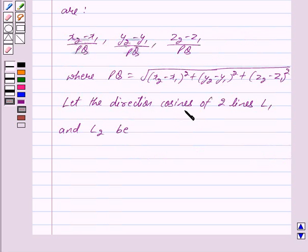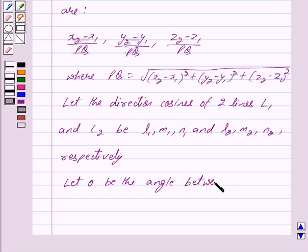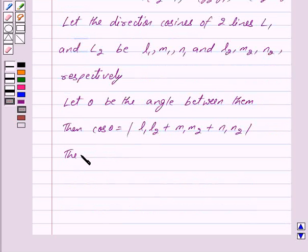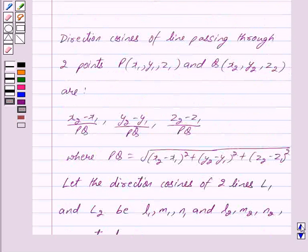Let the direction cosines of two lines L1 and L2 be (L1, M1, N1) and (L2, M2, N2) respectively, and let theta be the angle between them. Then cos θ = |L1·L2 + M1·M2 + N1·N2|. These two lines are perpendicular if theta equals 90 degrees. This is the key idea behind our question.